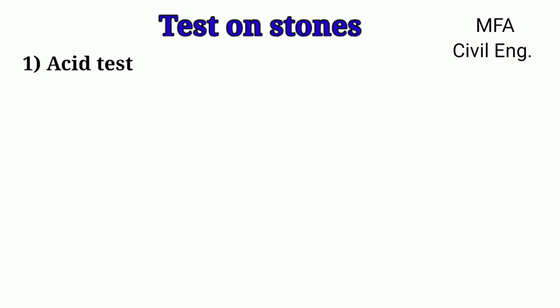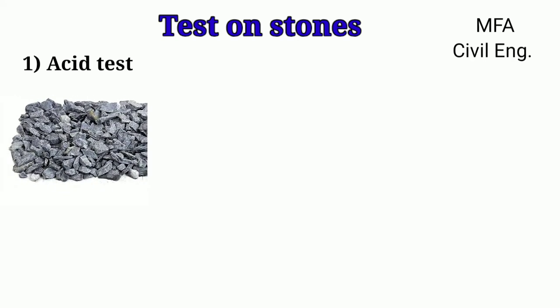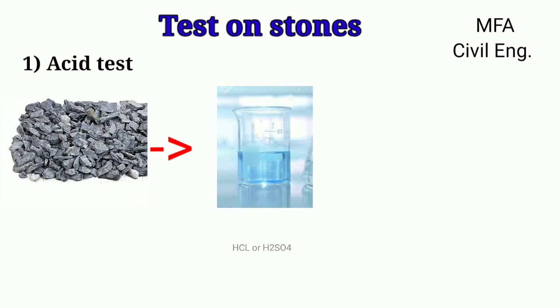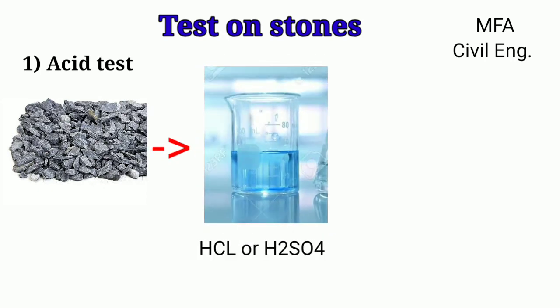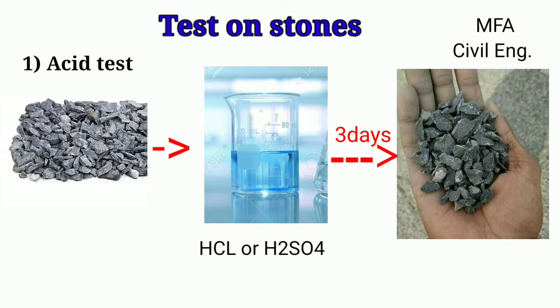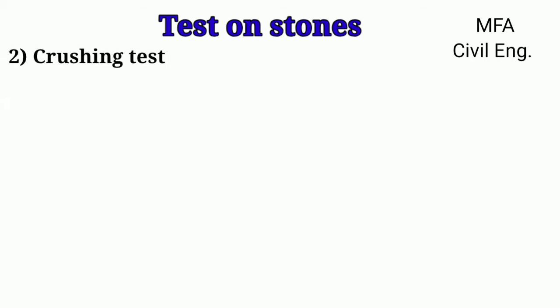Acid test: This test is useful to confirm the ability of a stone to withstand atmospheric action, gases, and acid fumes. In this test, 100 grams of stone chippings are kept in a 5% solution of hydrochloric acid or sulfuric acid. After three days, the chippings are taken out and dried. If the edges and corners remain sharp as before and the grains remain firm, it indicates that the stone is quite sound to resist weathering action.